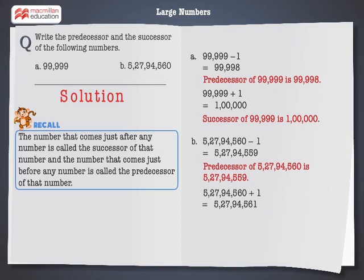And to find the successor of 5,27,94,560, add 1 to it. We get 5,27,94,561. Hence, the successor of 5,27,94,560 is 5,27,94,561.